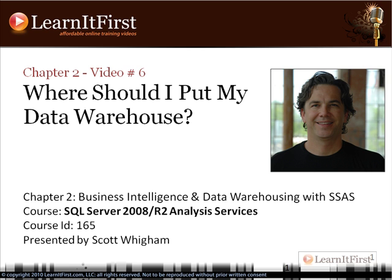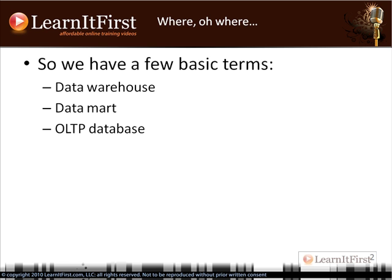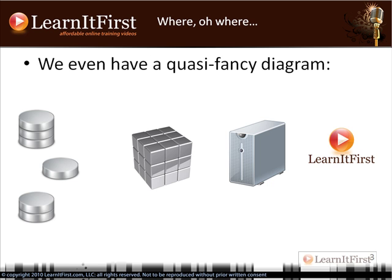Alright, settle in — we've got a pretty big topic to cover. What we've got to cover now is where to put your data warehouse, and even why that may be a misleading question. So far we have a couple of basic terms: we've talked about what a data warehouse is, what data marts are — a subset of a data warehouse related to a specific thing. We know what OLTP is and what OLAP is: OLTP handles our data entry, OLAP is for our analytics and reporting.